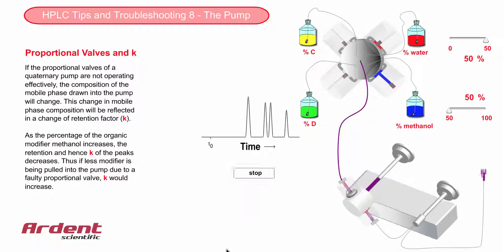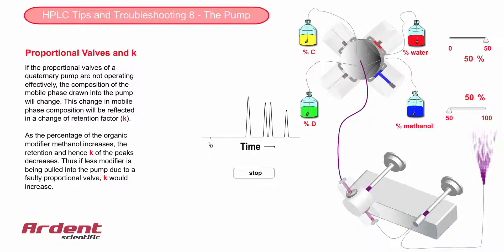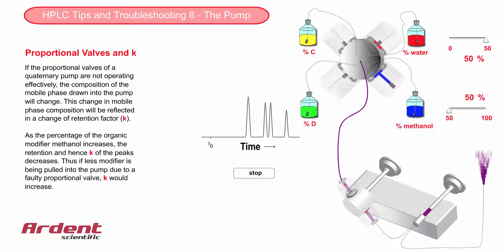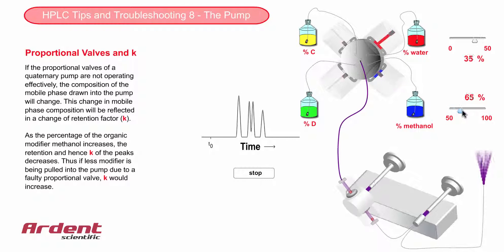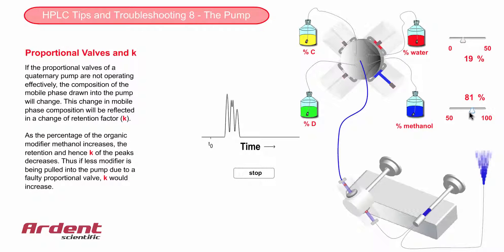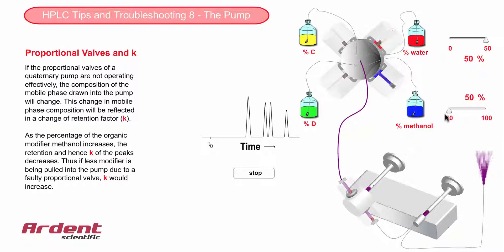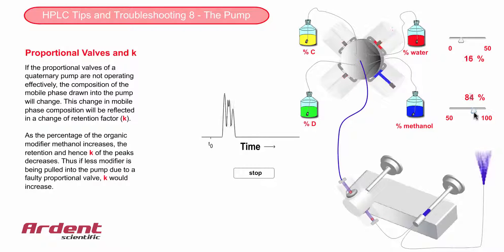An understanding of some of the basic principles in HPLC can help you diagnose where the problem is occurring. For example, a change in retention factor is symptomatic of a selectivity change, which can be caused by faulty proportional valves. A measure of the retention factor can even indicate which valve is faulty, although on many modern systems all proportioning valves are changed as one part.